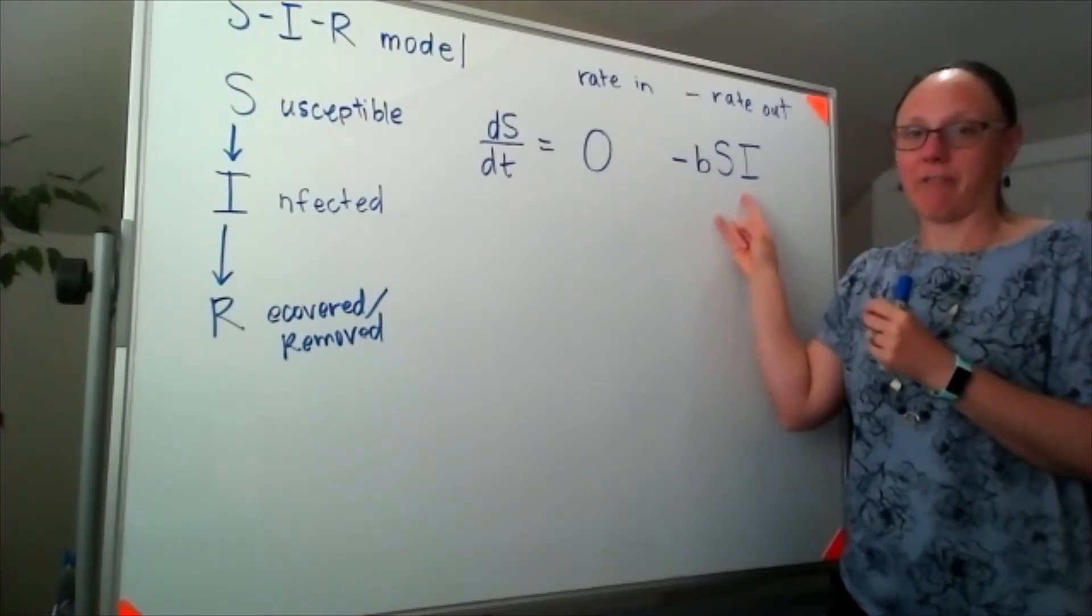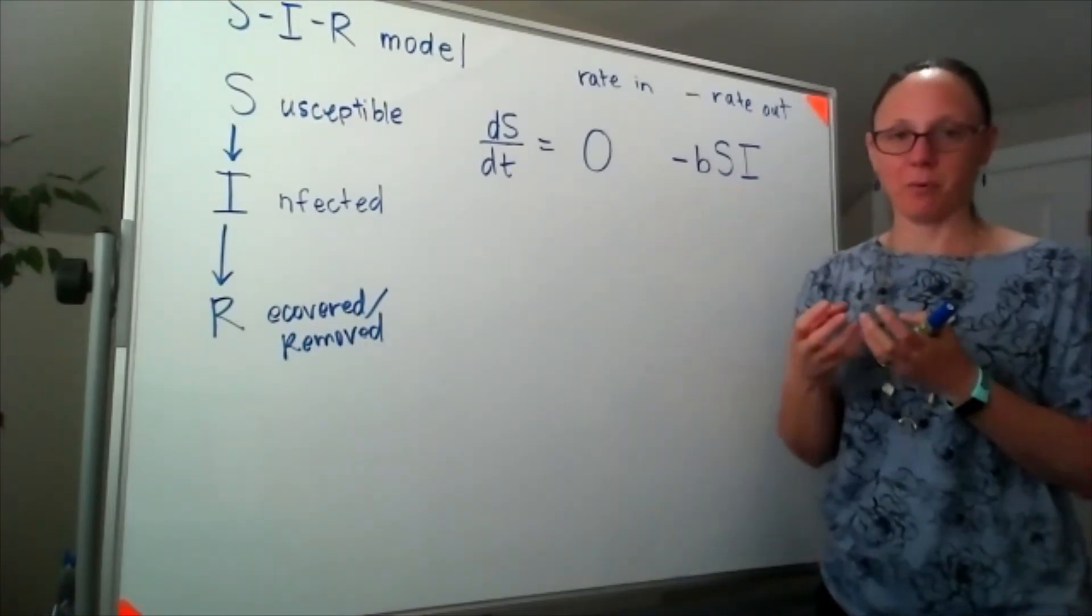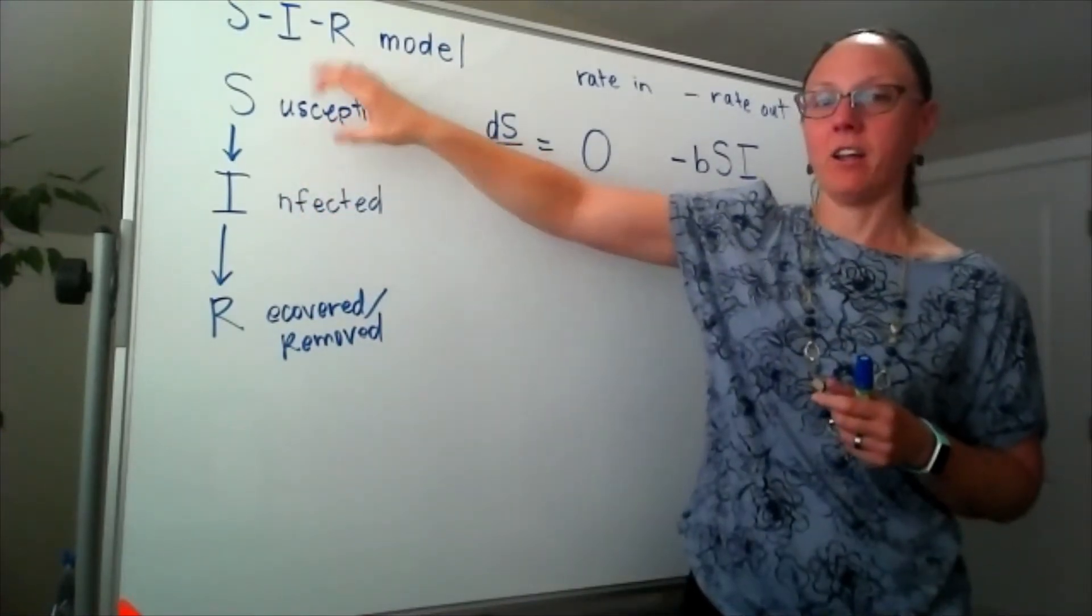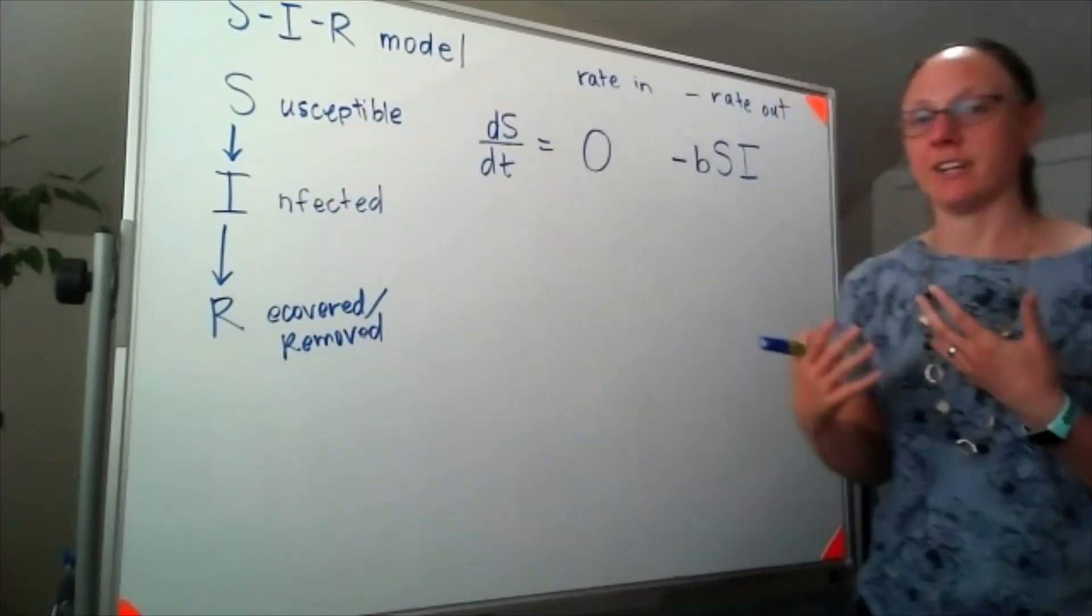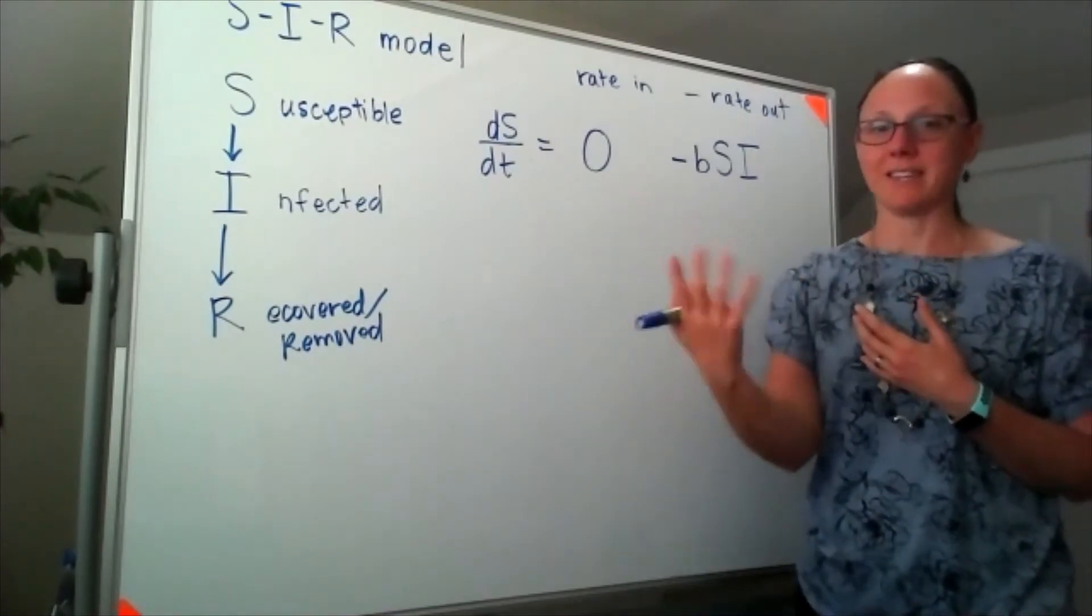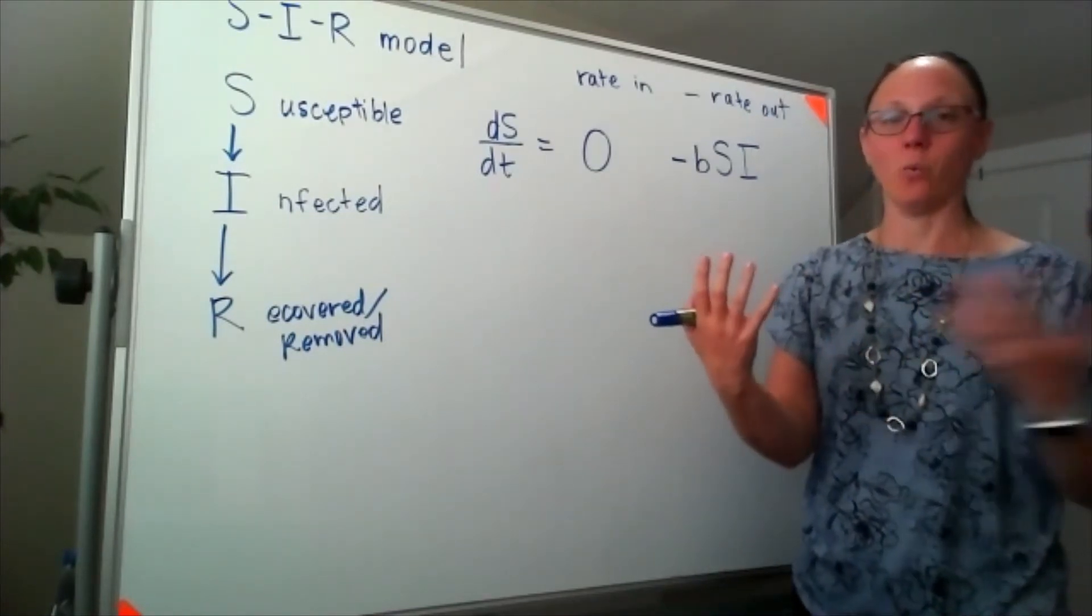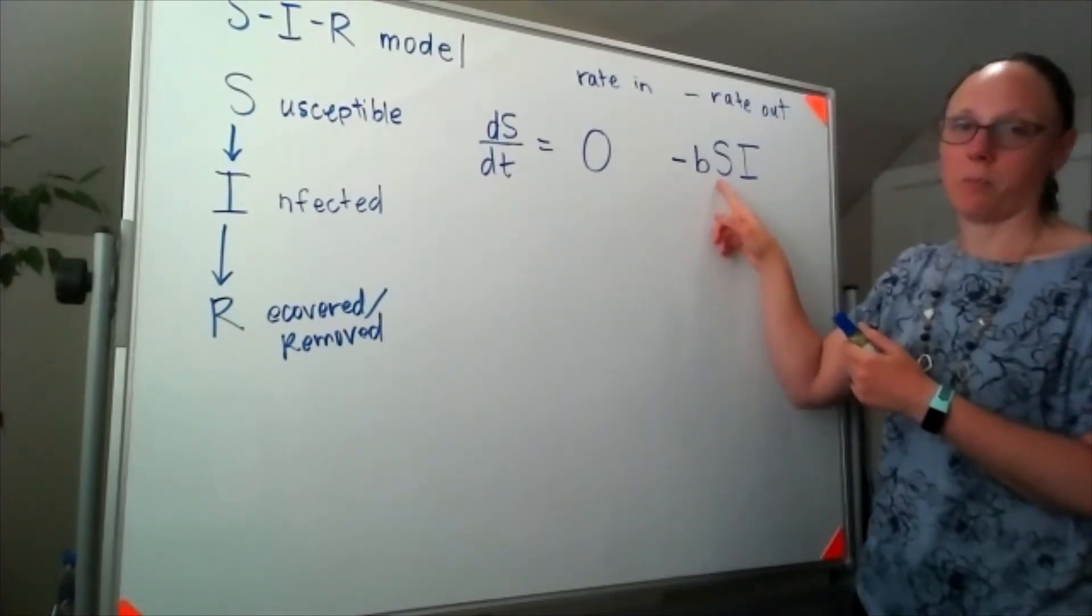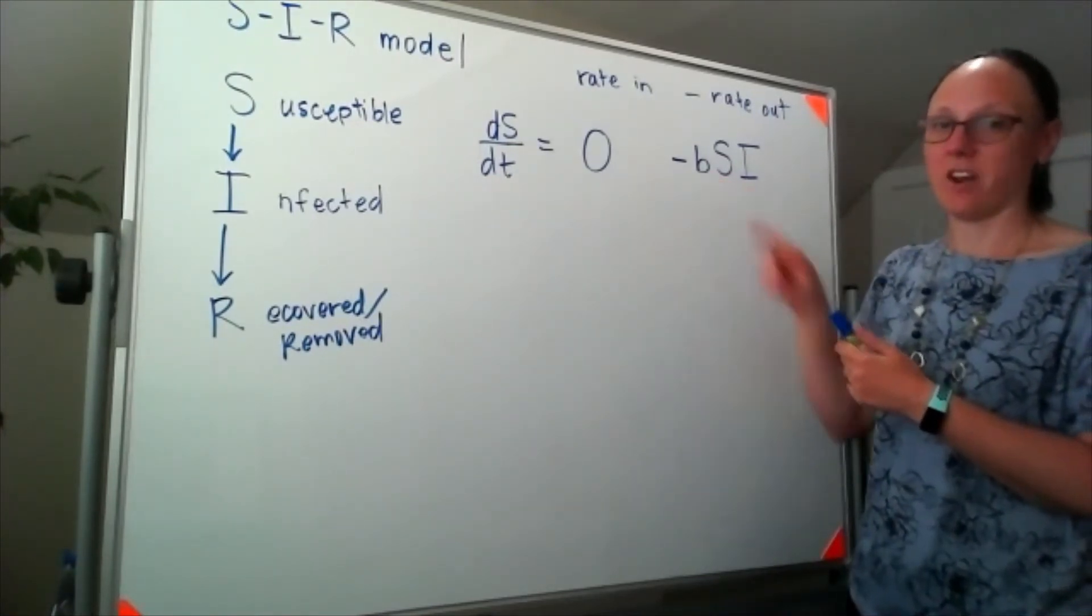then I have fewer susceptible because more of my overall population is here, not here. But in general, that transmission is going to happen because my susceptibles are interacting with the infectives. So the rate is proportional to both the number of susceptibles and the number of infected.